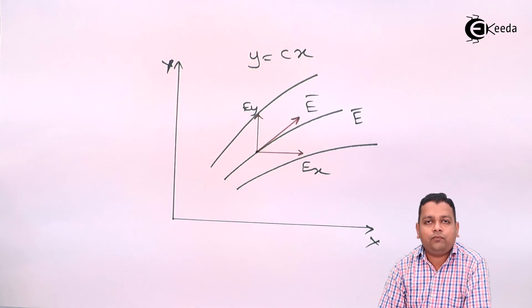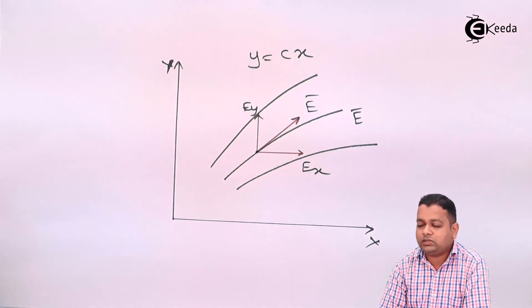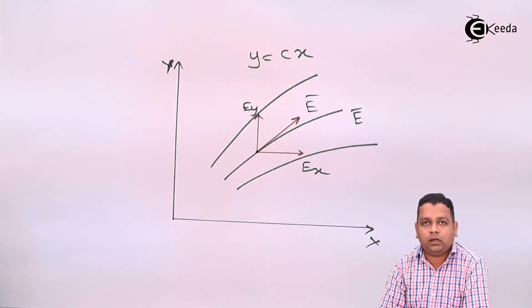At any point, if we put the coordinates into this equation, we shall be obtaining the constant c value. So, this was the equation having representation in Cartesian coordinate system. This we have obtained by just taking the ratio e y upon e x and differentiating it further. We can have the equations of streamlines in cylindrical coordinate system and spherical coordinate system also.